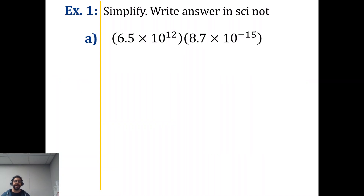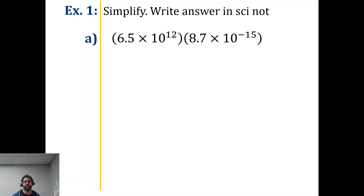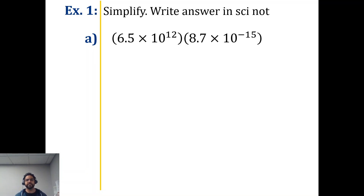Let's go ahead and identify a few examples that we're going to be doing together. Simplify, write answer in scientific notation. So the first thing you need to know is it is a multiplication problem. You've got a set of parentheses, another set of parentheses, quantity multiplied by another quantity. So we're just going to go ahead and multiply our basic numbers together — those are the numbers in the front, essentially like our coefficients. So I'm going to go ahead and ask us to multiply 6.5 by 8.7.